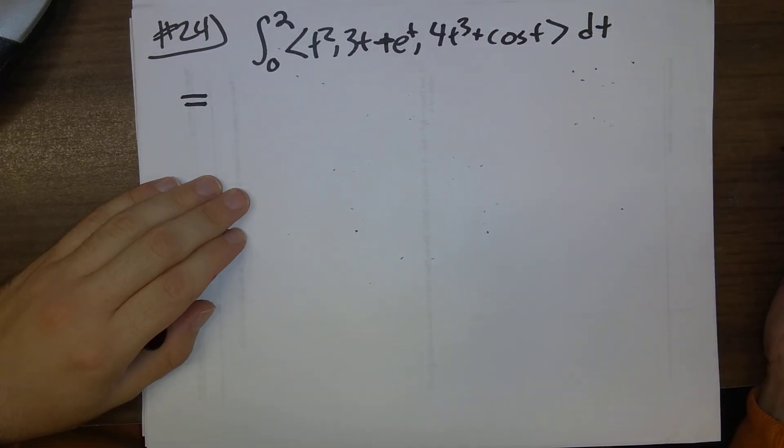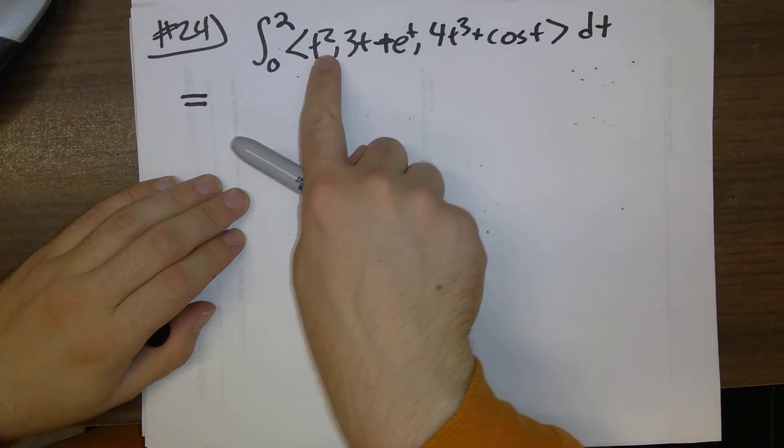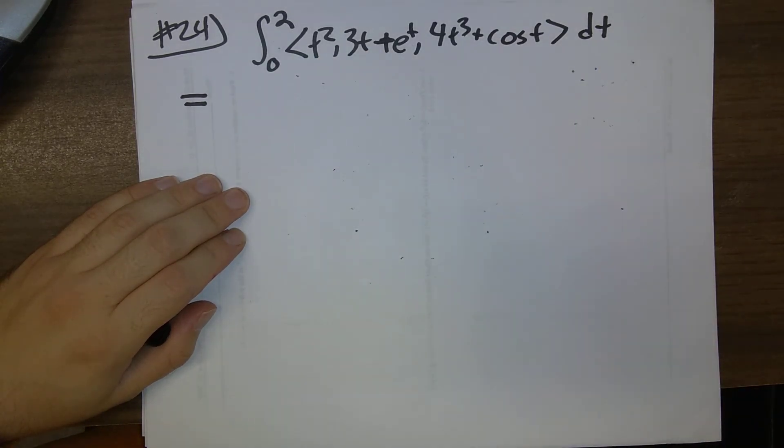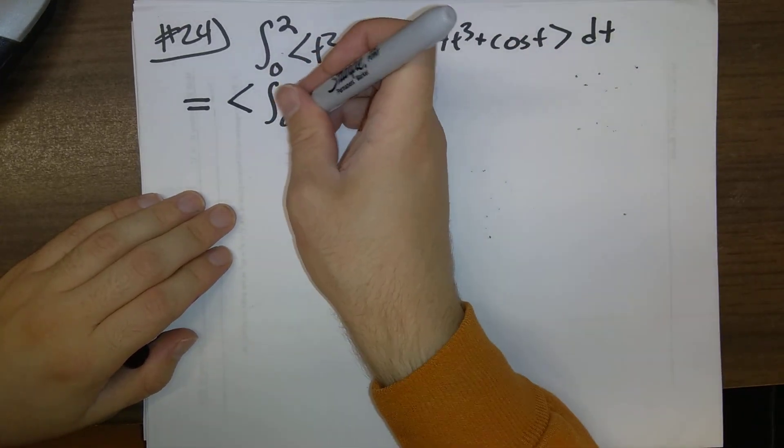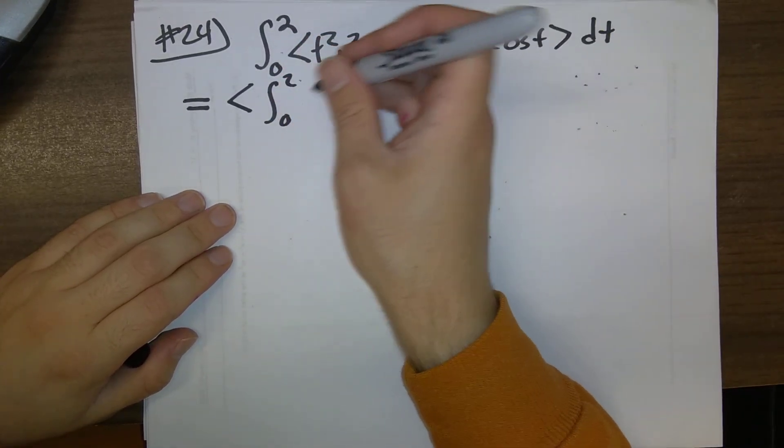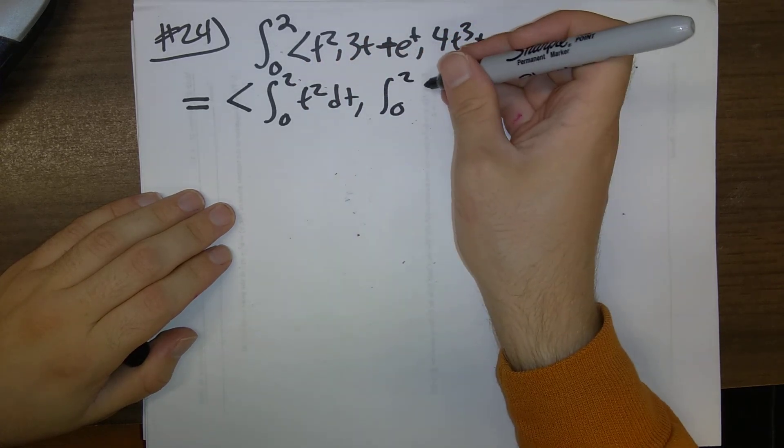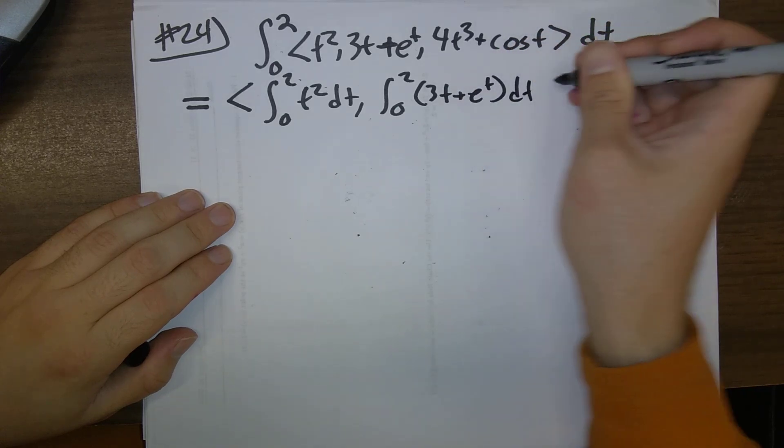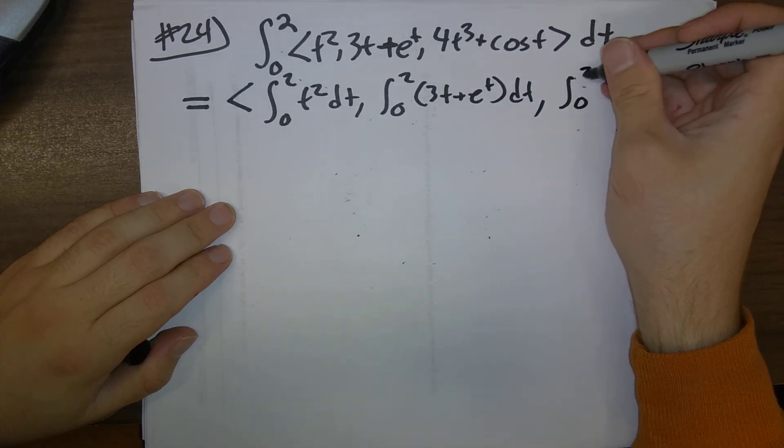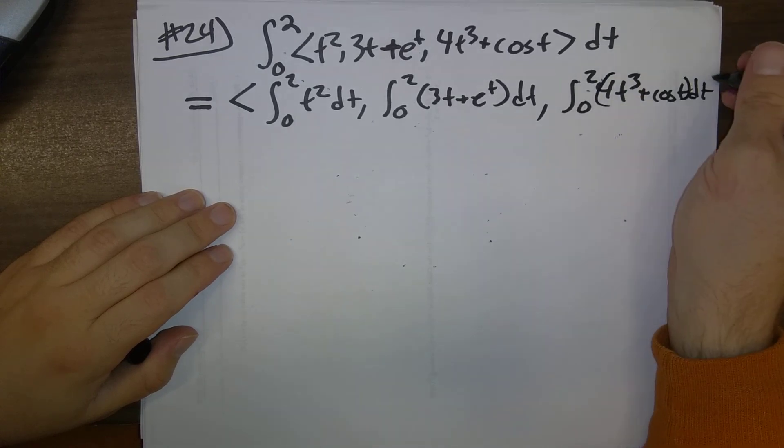This is a straightforward enough problem. Basically, all we have to do is compute each of the integrals here separately. It's the integral from 0 to 2 of t squared dt, the integral from 0 to 2 of 3t plus e to the t dt, the integral from 0 to 2 of 4t cubed plus cosine t dt.